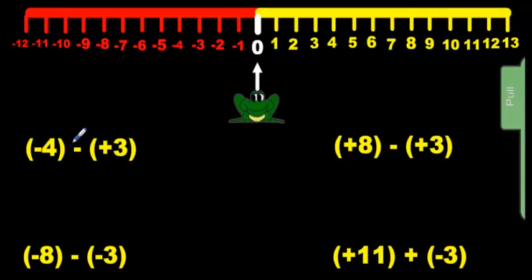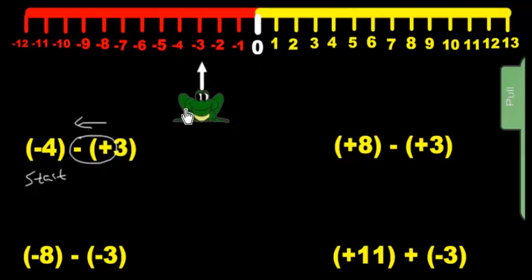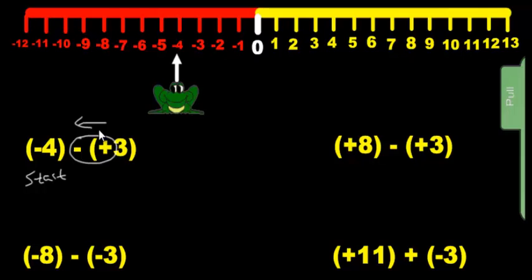I'm talking about these two signs. If they are different — which they are, they're opposites — we go to the left. The first number indicates our starting point. So meet Mr. Frog. He's going to start at negative 4. We're going to move him to the left — that's what the arrow says — we're going to move him to the left three times.